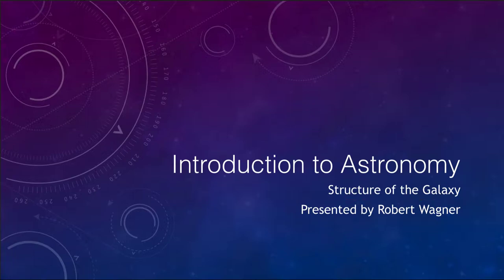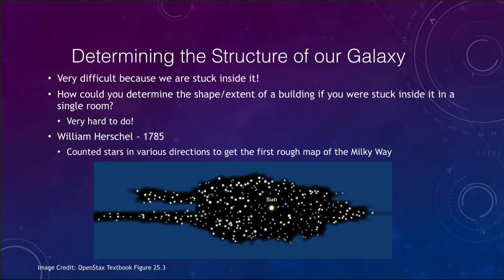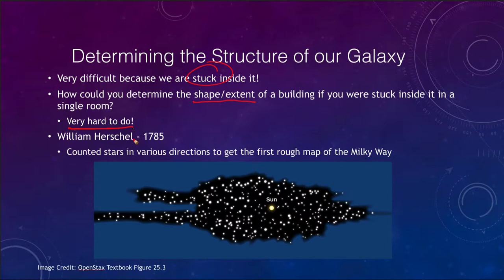How do we determine the structure of our galaxy? It's not an easy thing to do, primarily because we are stuck inside our galaxy. An example: it would be very hard to know the shape or extent of a building if you're stuck inside a single room. You might have windows to look out, but if you could not move from that room and had not seen the building before, you would have a very difficult time determining how many floors the building has, how high or low it goes.